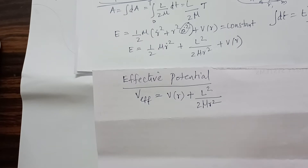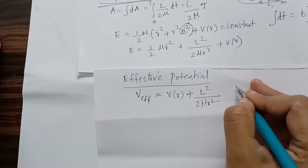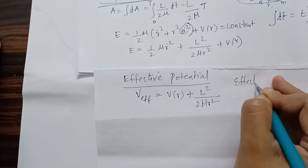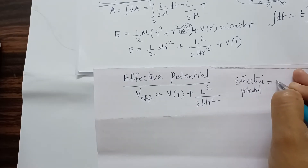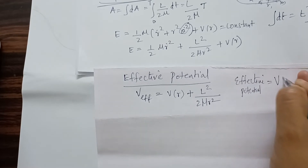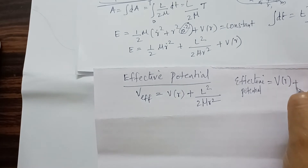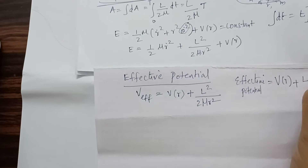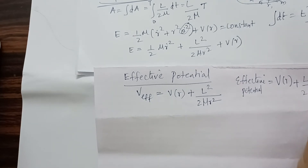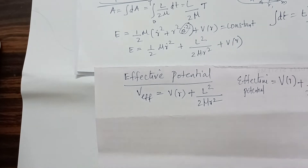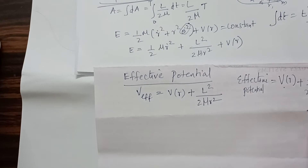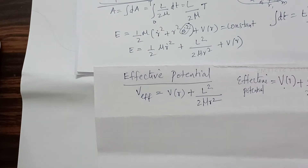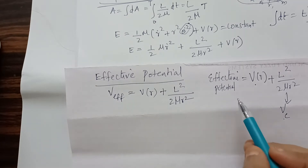What is the name of V_effective, the effective potential? The term L² / (2μR²) is called the centrifugal potential, denoted V_C. So the effective potential is the sum of the real potential V(R) and the centrifugal potential V_C.